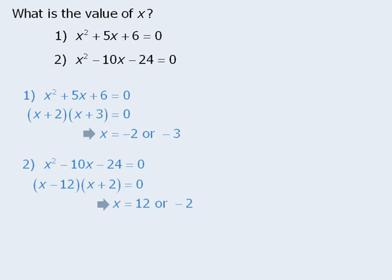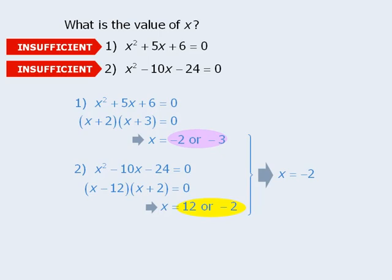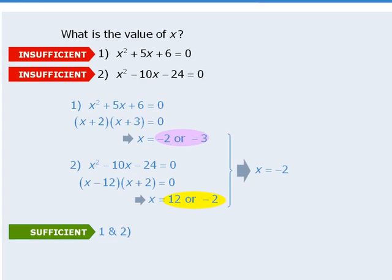Notice that the two statements no longer contradict each other. Statement 1 tells us that x must equal negative 2 or negative 3. And statement 2 tells us that x must equal 12 or negative 2. When we combine both statements, we can see that x must equal negative 2. So statements 1 and 2 alone are each insufficient, but the two statements combined are sufficient, so the answer here is C.